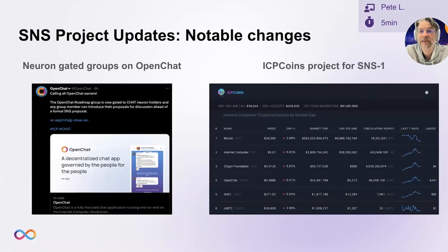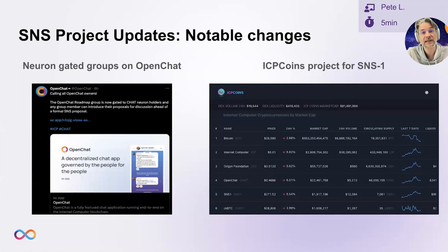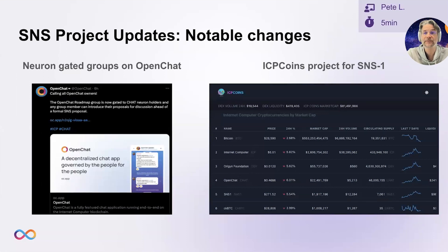With both SNSs, there's been some recent interesting developments. On the OpenChat side, OpenChat launched a feature which allows neuron-gated chat groups to be created. This means chat groups can be created which are restricted to those with a vested interest in SNS governance, improving the quality of some of those groups. And on the SNS1 side, excitingly, the community has risen to the challenge of building something for this DAO. ICP Coins is a project to build a dashboard which tracks the performance of tokens launched on the IC, a sort of on-chain version of CoinMarketCap.